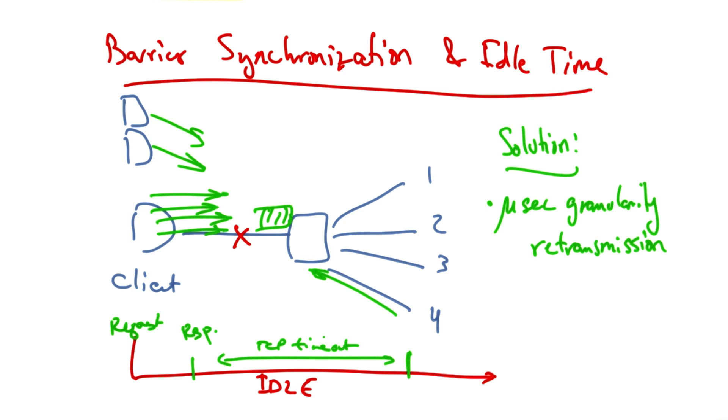Another way to reduce the network load is to have the client acknowledge every other packet, rather than every packet, thus reducing the overall network load.